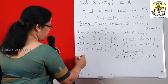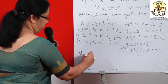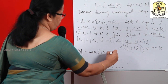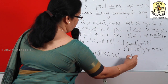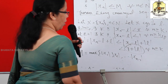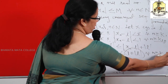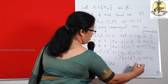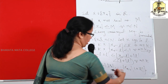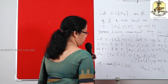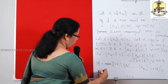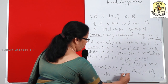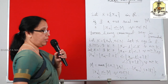So we set M equal to the maximum of |X1|, |X2|, ..., |X_{K-1}|, and 1 + |L|. The terms X1, X2, ..., X_{K-1} are handled by this finite maximum, and the rest of the terms satisfy modulus X_N < 1 + |L|. Therefore it is obvious that modulus X_N ≤ M for every N belonging to N, which means the sequence X_N is bounded.